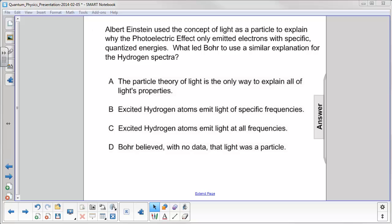A. The particle theory of light is the only way to explain all of light's properties. B. Excited hydrogen atoms emit light of specific frequencies. C. Excited hydrogen atoms emit light at all frequencies. D. Bohr believed with no data that light was a particle.